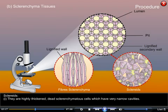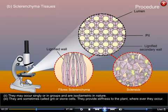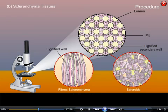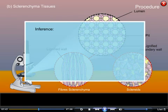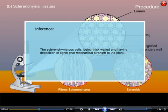Sclerides: They are highly thickened, dead sclerenchyma cells which have very narrow cavities. They may occur singly or in groups and are isodiametric in nature. They are sometimes called grit or stone cells. They provide stiffness to the plant wherever they occur. Inference: Sclerenchyma cells, being thick-walled and having deposition of lignin, give mechanical strength to the plant.